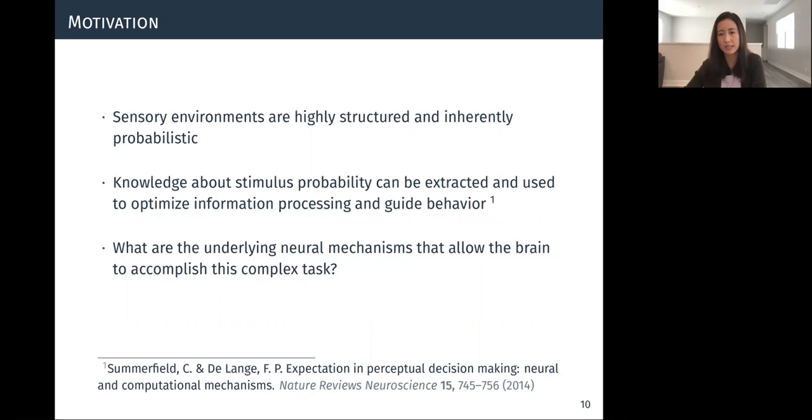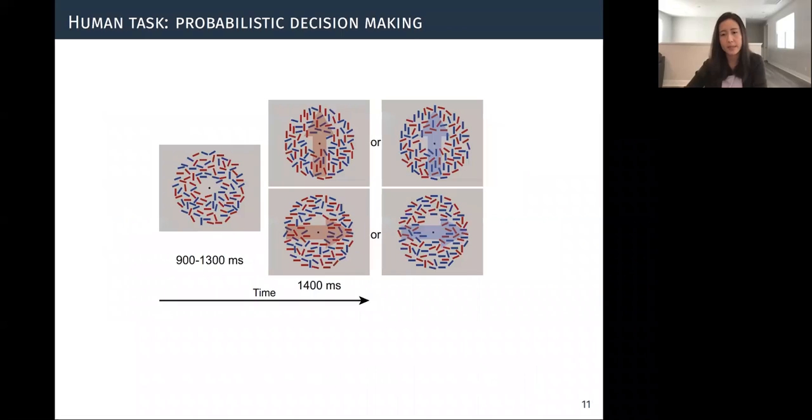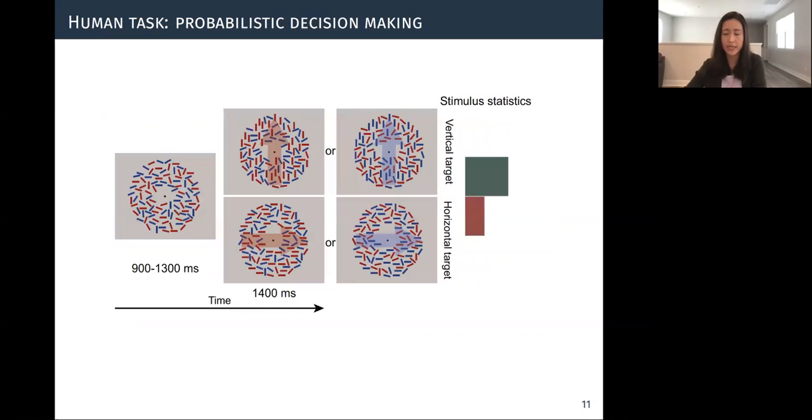So first, we tested human participants on a perceptual decision-making task, where basically the stimulus probability was manipulated on a block-to-block basis, such that within each block of trials, one target feature, say horizontal orientation in this case, was more likely to be the target than the other feature, which is the vertical orientation. Oh sorry, the opposite. So the vertical target being more likely to be the target. So each of these blocks was treated as a training block, and we then tested participants' knowledge of the trained probability by varying the stimulus statistics of the following block to be either identical or different from the trained probability.